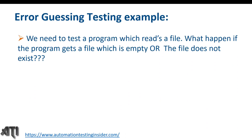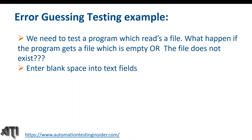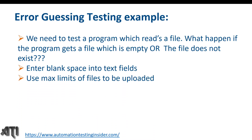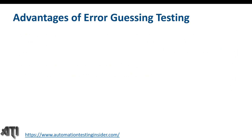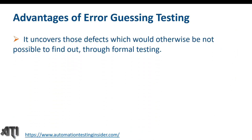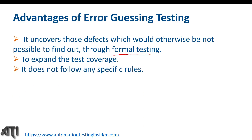Examples include: testing a program that reads a file — what happens if the file is empty or doesn't exist; entering blank spaces into text fields; using maximum limits for file uploads. The advantage of error guessing is that it uncovers defects that would not otherwise be found through a formal testing approach, expanding test coverage. It does not follow any specific rules.